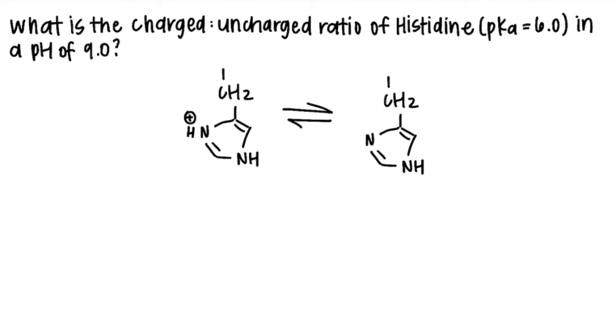You are required to know the ionizable side chains through the acronym DRY-HEC. Those are the one-letter abbreviations of the amino acids and you need to know where on the structure it is able to be ionized or lose a proton or gain a proton.